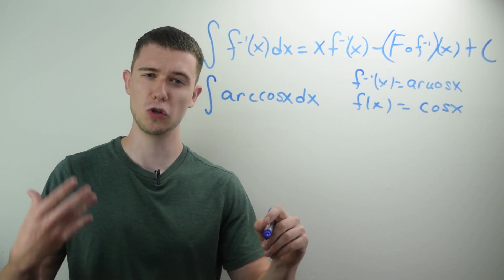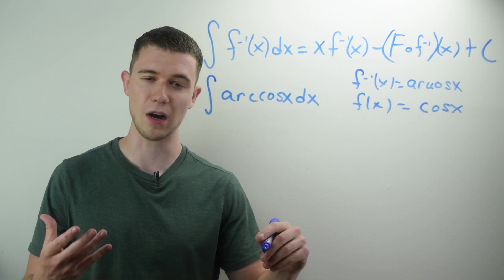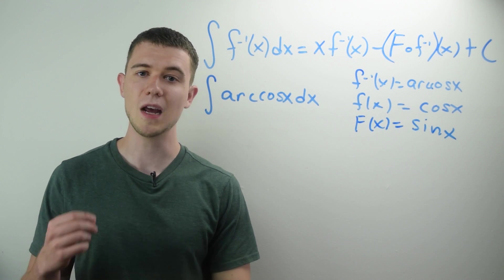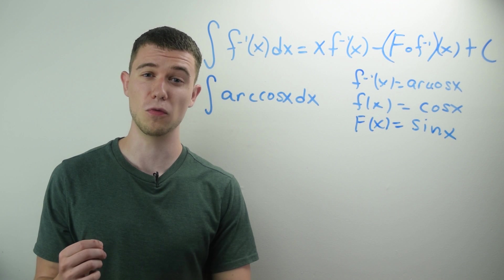The antiderivative of regular cosine is regular sine. So this is something you should know at this point, taking a regular calculus class.